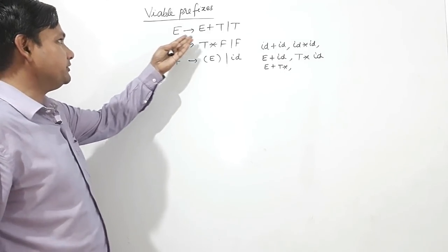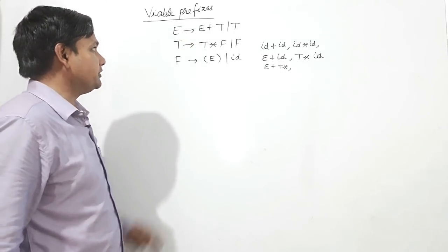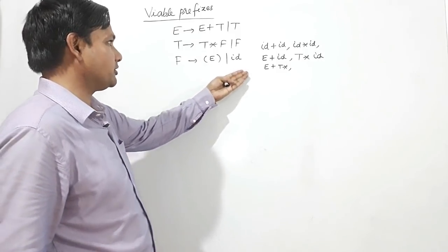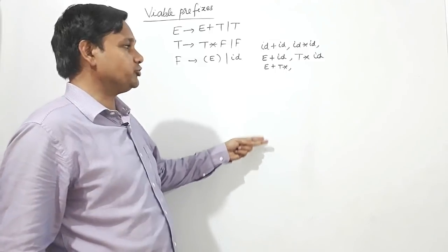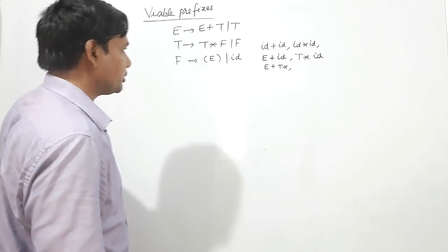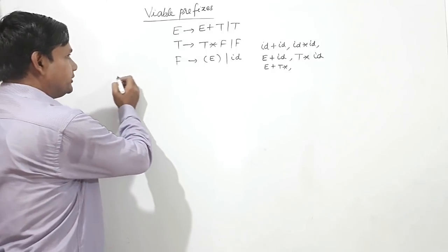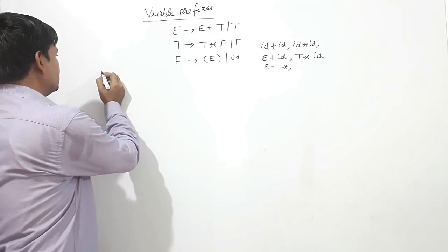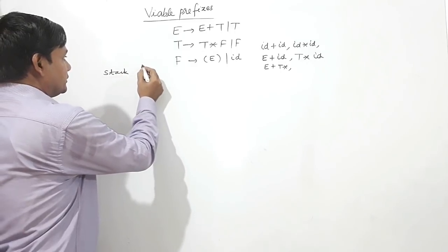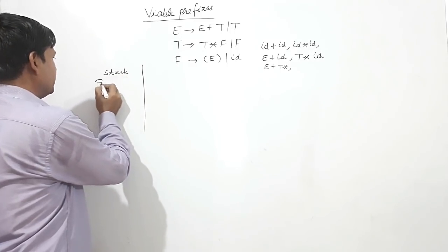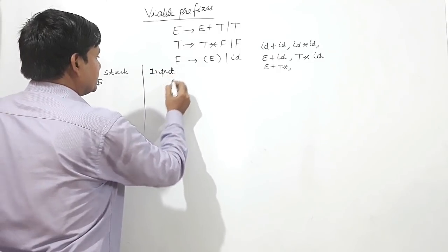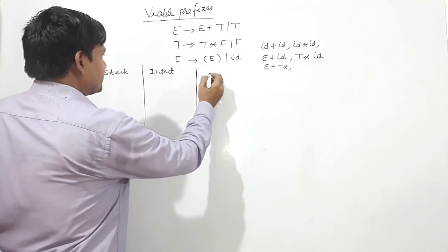We have this grammar: E gives E plus T or T; T gives T star F or F; F gives bracket E or some identifier. We have to check whether these prefixes are the viable prefixes or not. Here is the stack — at the bottom it's a dollar — and the input, and what action is being performed.